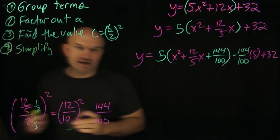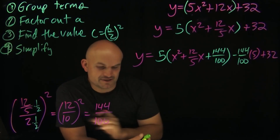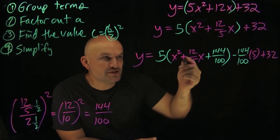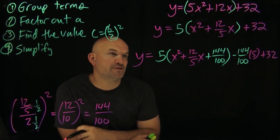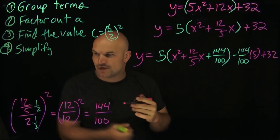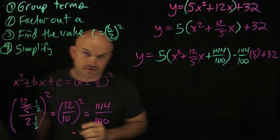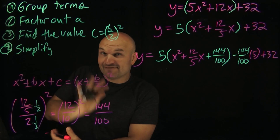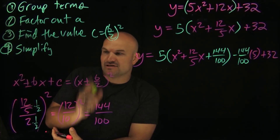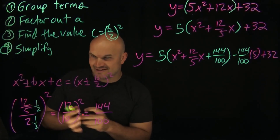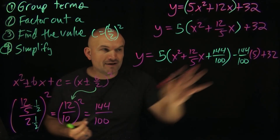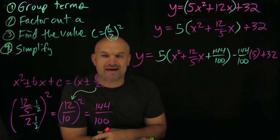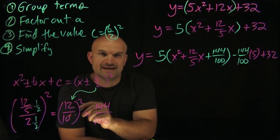Now comes the last step: simplify. When dealing with fractions it can be confusing to recognize the perfect square trinomial. The key relationship is: if you have x squared ± bx + c as a perfect square trinomial, it factors down to (x ± b/2) squared. We already found b/2 — it was 12 over 10. So I don't need to think about what two numbers multiply to give 144 over 100 and add to give 12 over 5. I just say it's going to be x plus 12 over 10, because that's my b over 2.